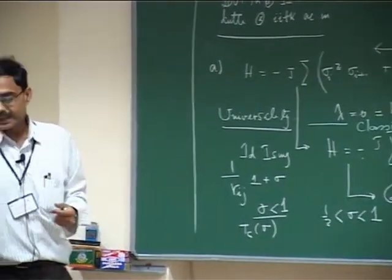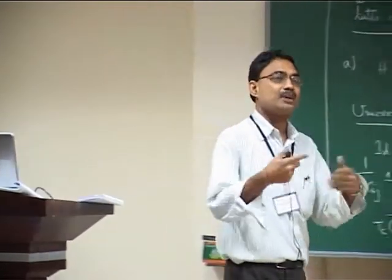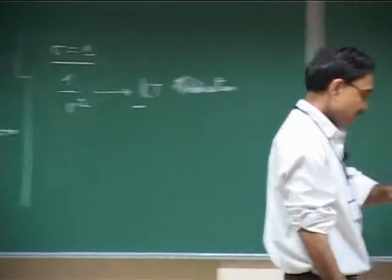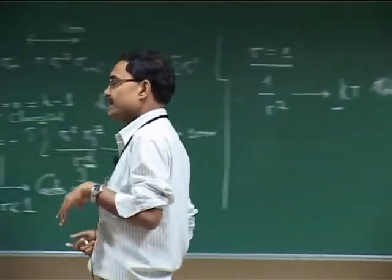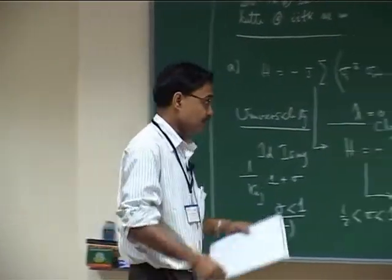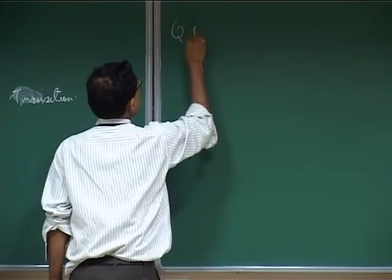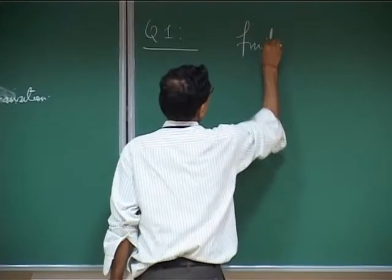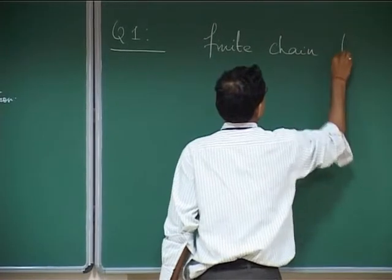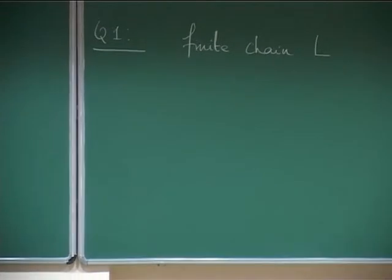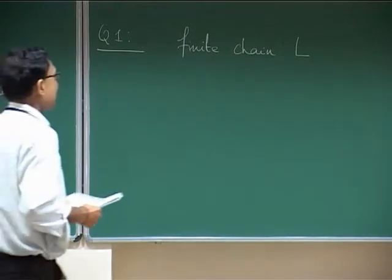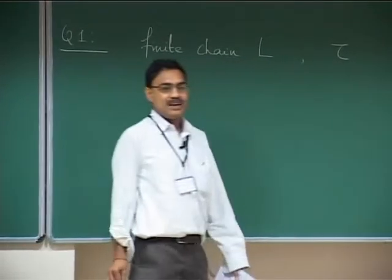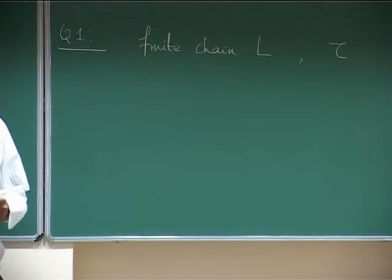Second point: I have been considering thermodynamically large systems where L → ∞. Now someone may ask: I give you a finite chain of size L. I prepare it in the ground state, I drive it, there is a so-called quantum critical point — you have to tell me why I say 'so-called' — and what τ I should change my field with so that I do not generate any defect.